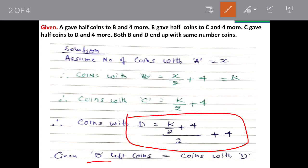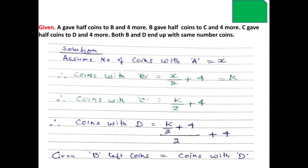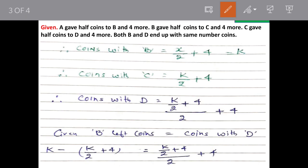Now in the question it is given that coins left with B are equal to coins with D. So we'll see. Coins left with B will be how many? Coins received from A minus C given. These are the coins going to be left with B. So from A he has received K coins and he has given K by 2 plus 4 equal to C. So these are the coins with B and coins with D this we have worked out already. So we equate these two.